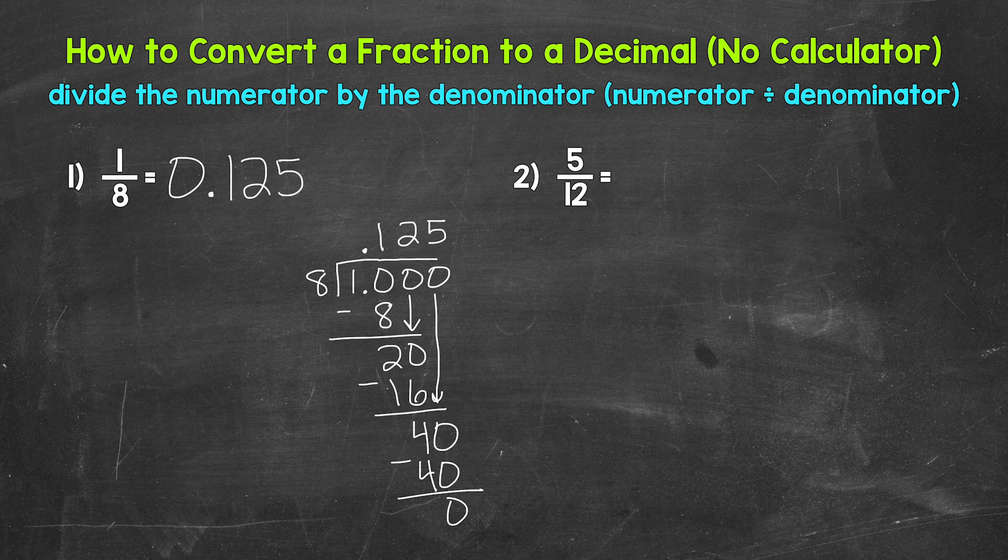Let's move on to number two, where we have 5 twelfths. So we need to do 5 divided by 12. Let's set this up. We have 5 divided by 12. How many whole groups of 12 in 5? Well, we can't do that. So we need a decimal and a zero in order to work through this. Bring the decimal straight up. We can extend this division bar here.